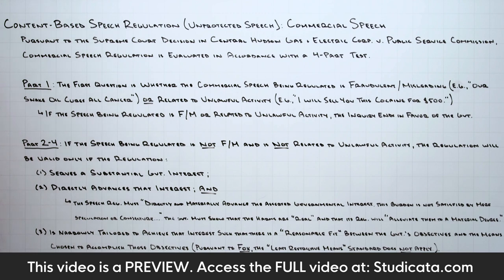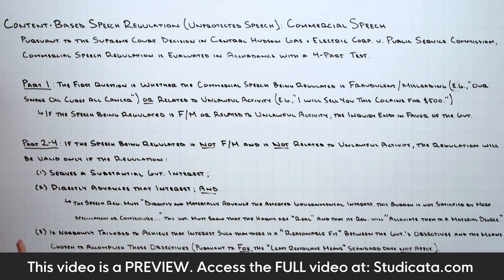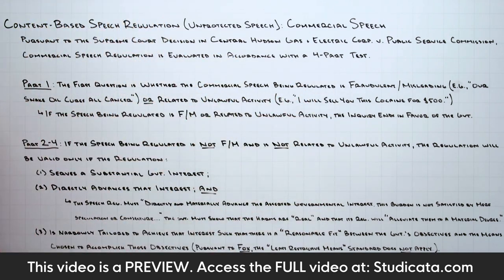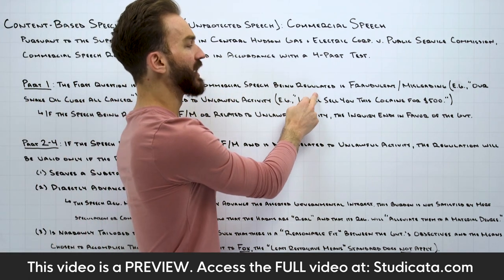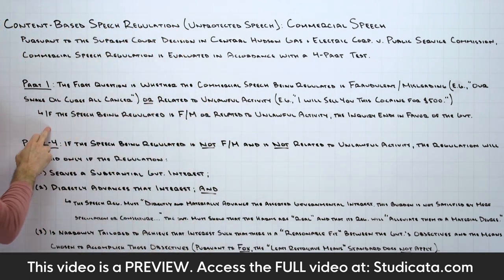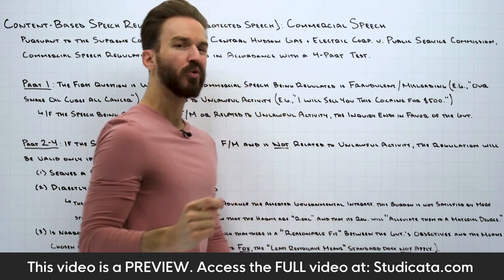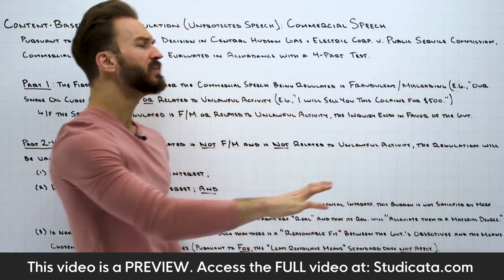Big picture: if the government is trying to regulate the content of advertisements and we're deciding whether this violates the free speech clause of the First Amendment, we apply the four-part test from Central Hudson Gas. The first question in part one is whether the commercial speech being regulated is fraudulent, misleading, or related to unlawful activity. If it is, the inquiry ends in favor of the government, because this is unprotected speech.